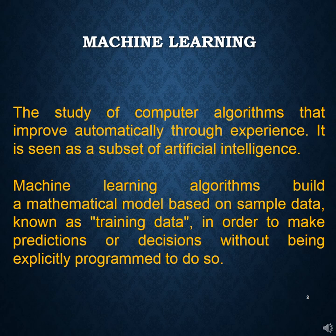The process of learning begins with observation of data such as examples, direct experience or instructions in order to look for patterns in data and make better decisions in the future based on the examples that we provide. The primary aim is to allow the computers to learn automatically without human intervention or assistance and adjust actions accordingly. According to Wikipedia, machine learning is the study of computer algorithms that improve automatically through experience. It is seen as a subset of artificial intelligence.